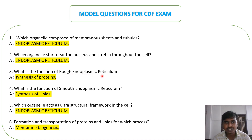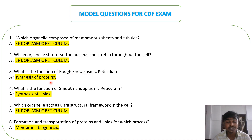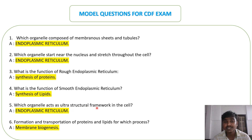What is the function of rough endoplasmic reticulum? Synthesis of proteins. What is the function of smooth endoplasmic reticulum? Synthesis of lipids. Which organelle acts as an ultrastructural framework in the cell? The endoplasmic reticulum — for the formation and transportation of proteins and lipids.